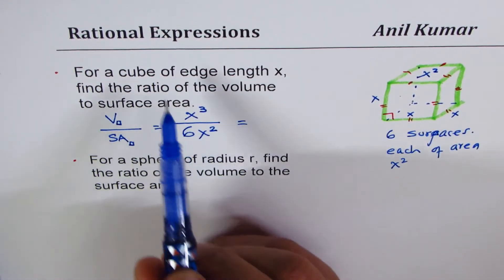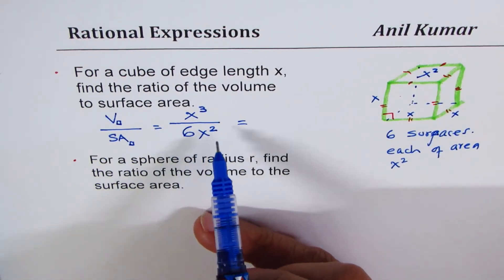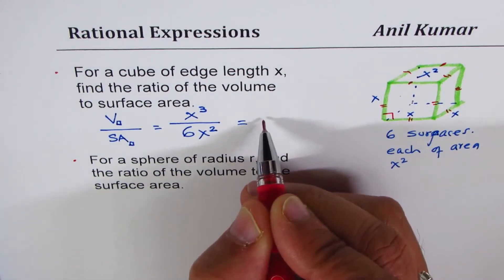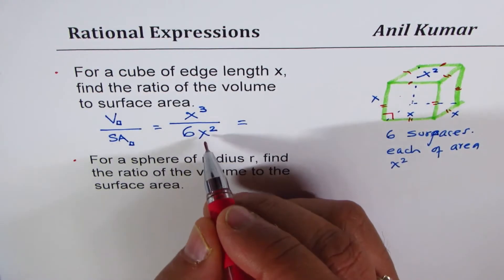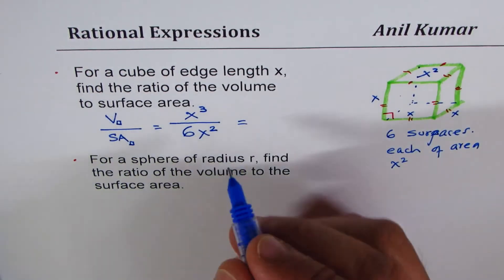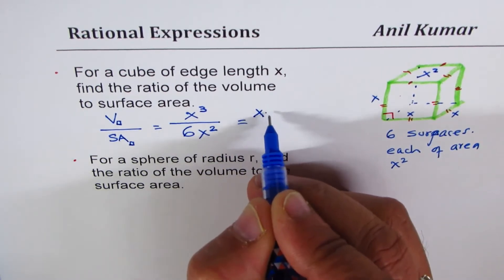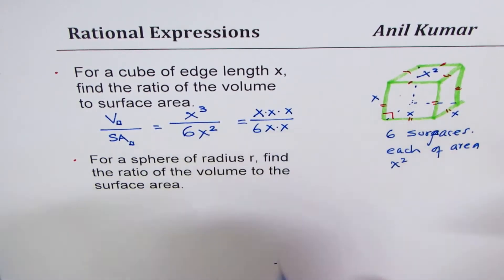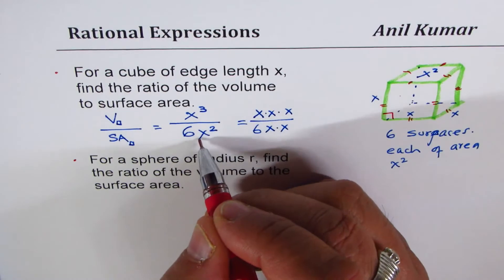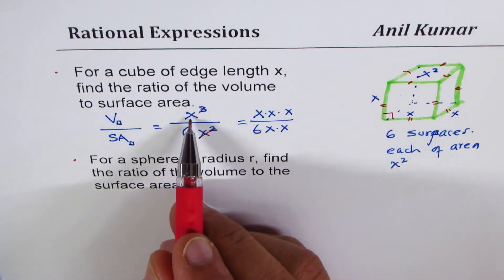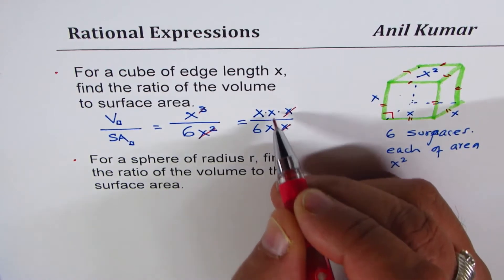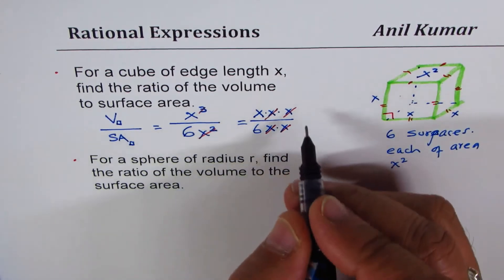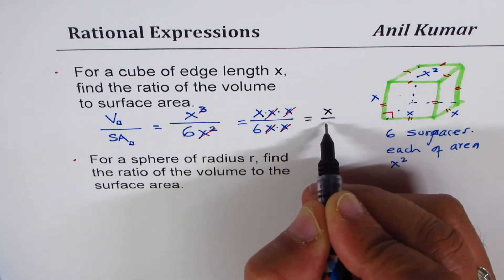And now we have written it in rational expression form. We have to simplify. When you simplify, the number is 1 over 6. And as far as the x's go, two of these x's can cancel. Let me show you the step here. x cube really means x times x times x. This means 6 times x times x. So when we cancel, we are left with x. Each x gets cancelled one by one. And you are left with x over 6. And we get our result as x over 6.